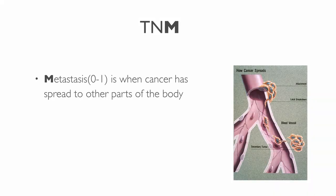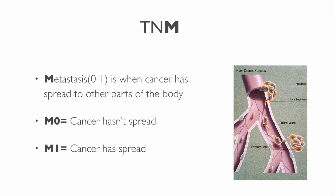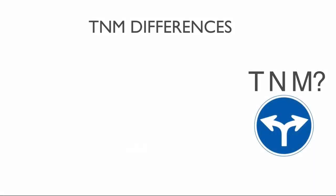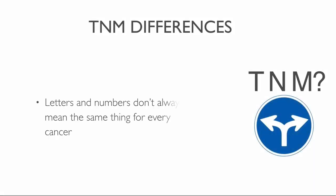Metastasis — M: the letter M indicates whether the cancer has metastasized, or spread to other parts of the body. M0 means that the cancer has not spread. M1 indicates that cancer has spread. Most cancer types have their own version of this classification system, so letters and numbers don't always mean the same thing for every kind of cancer.